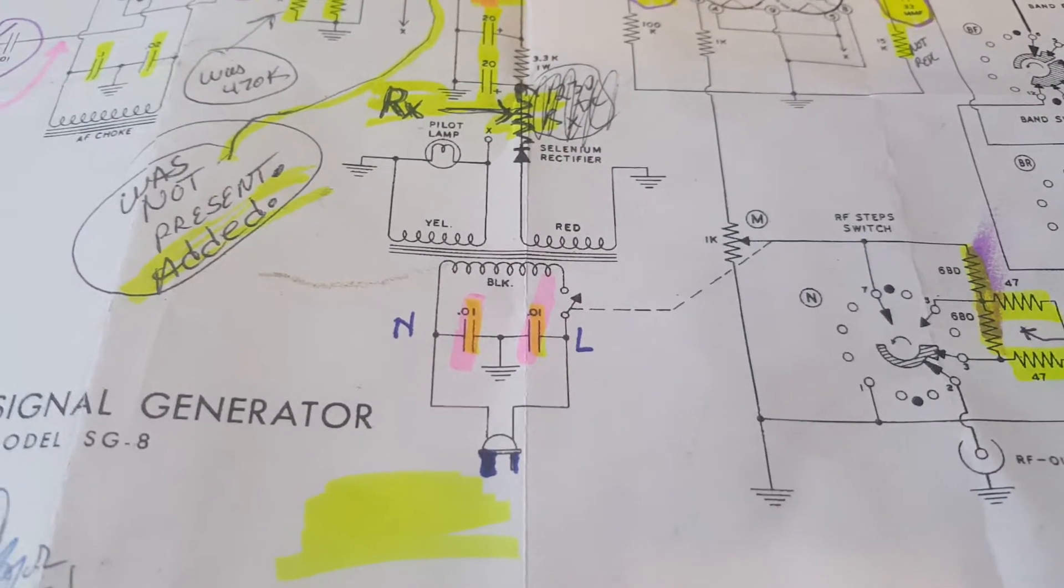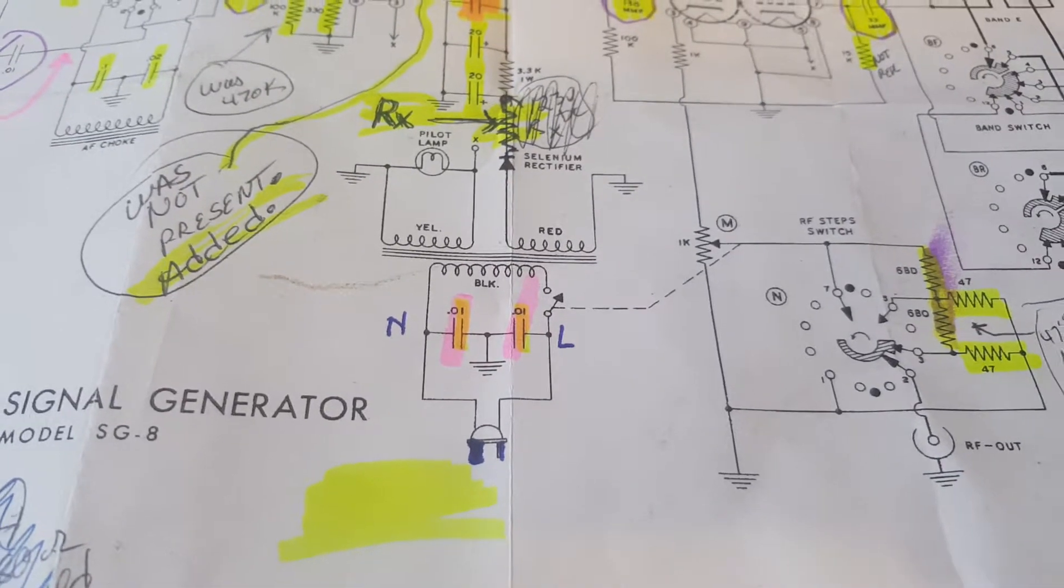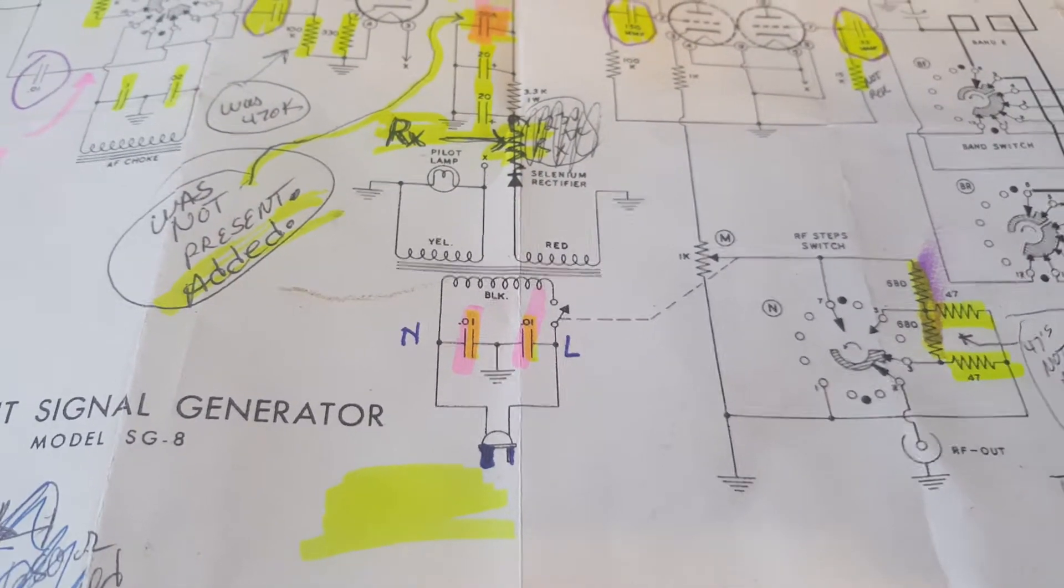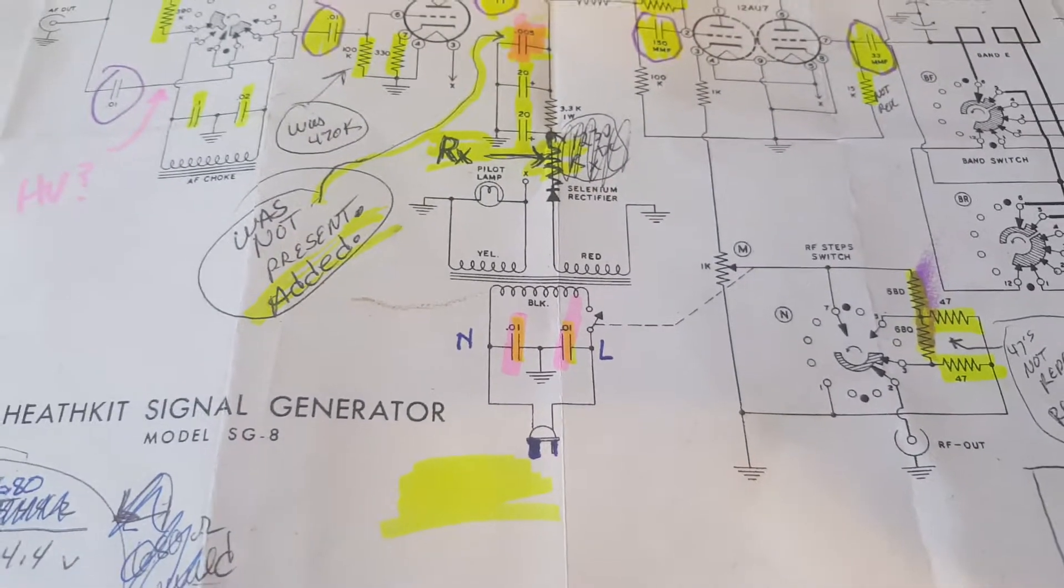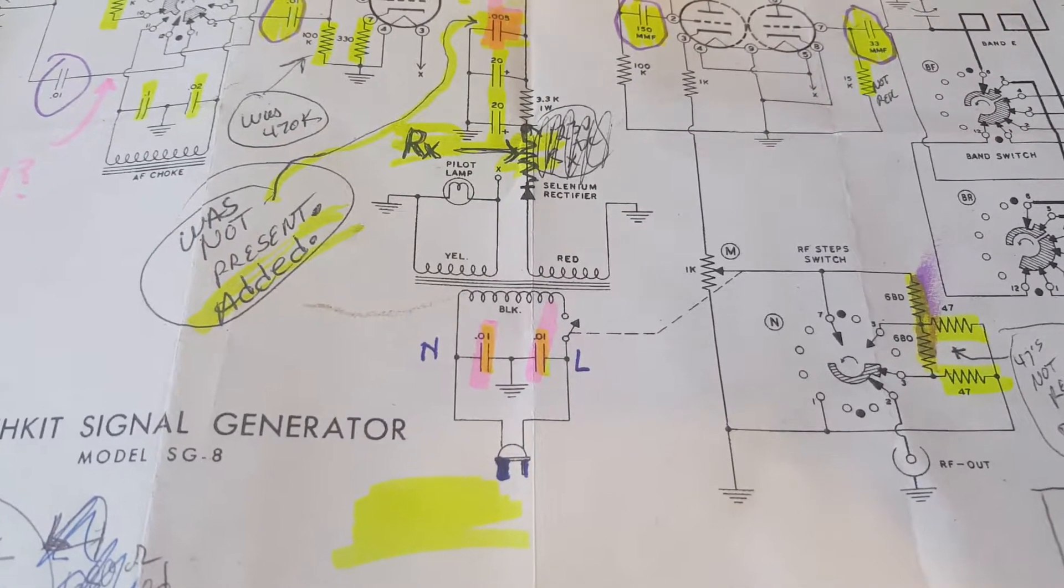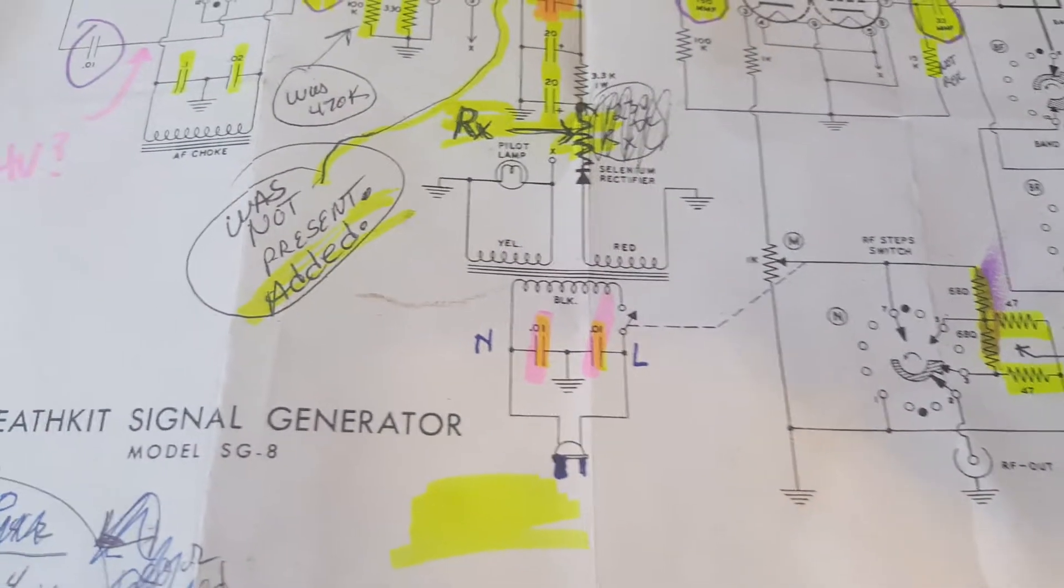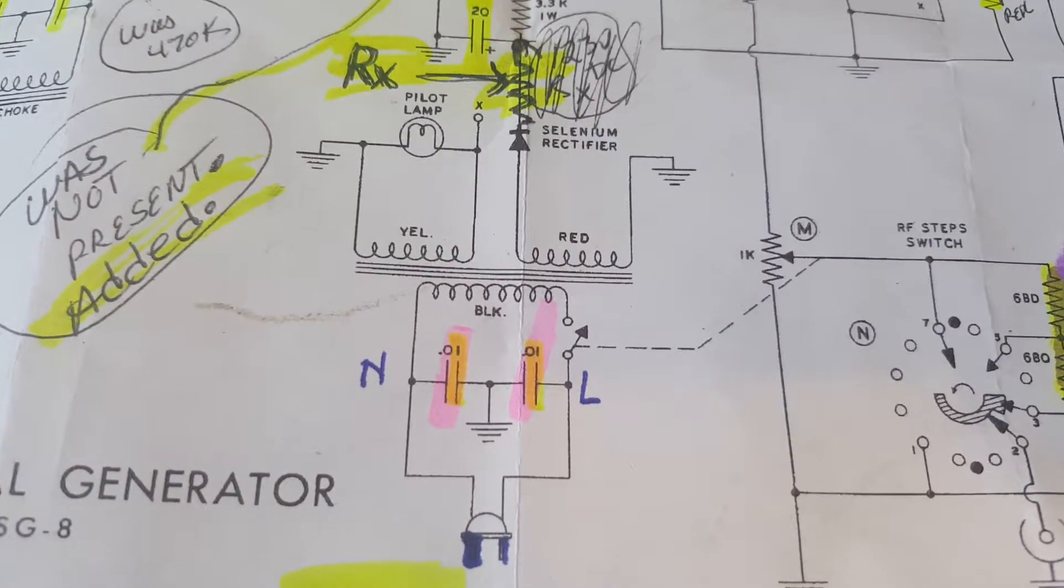However, if B minus is at chassis potential, then all is not lost. You just ground the chassis, switch the hot lead, and you'll never cook yourself.